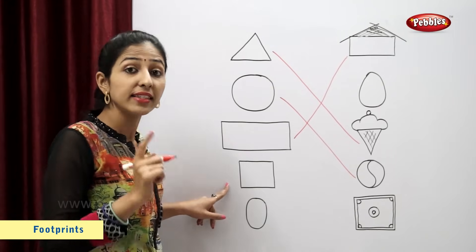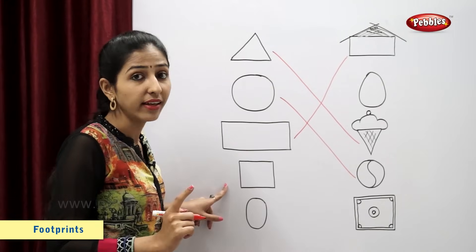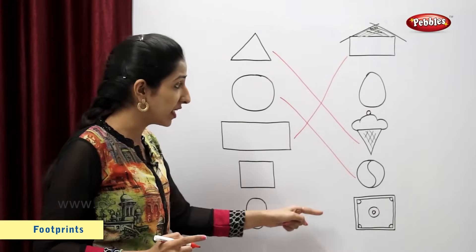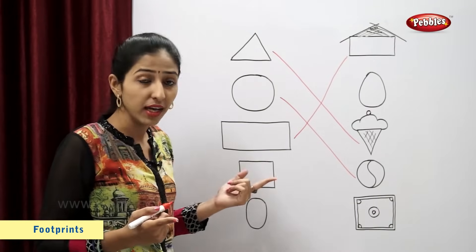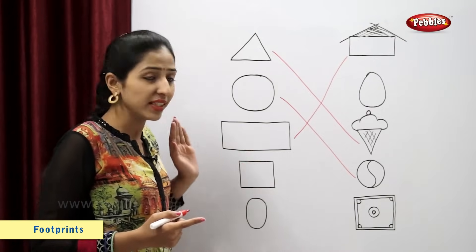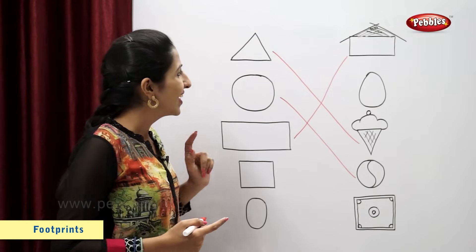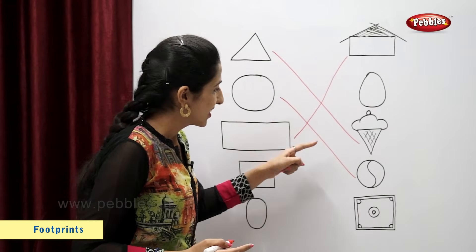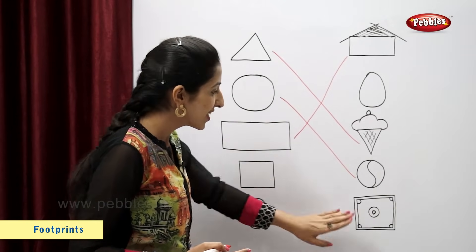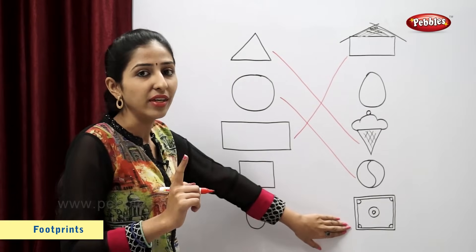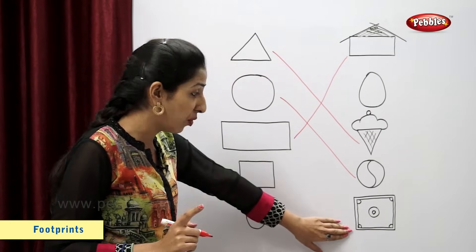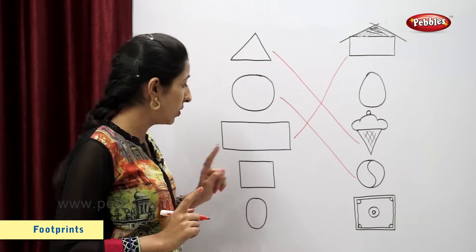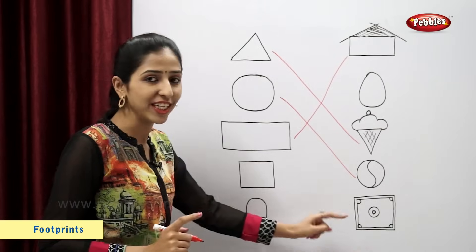This is a square. Now, let's find a figure similar to this square. Carom board? A carom board looks like a square. So, now, let's match.